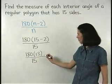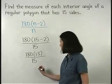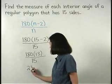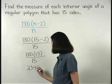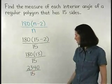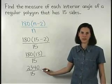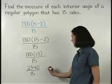And 180 times 13 is 2,340. So we have 2,340 over 15. And 2,340 divided by 15 is 156.